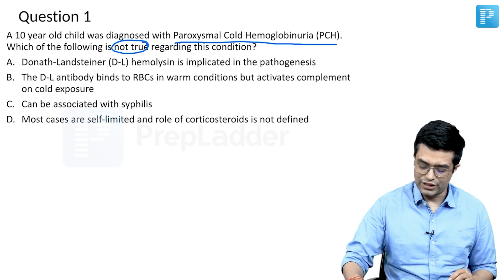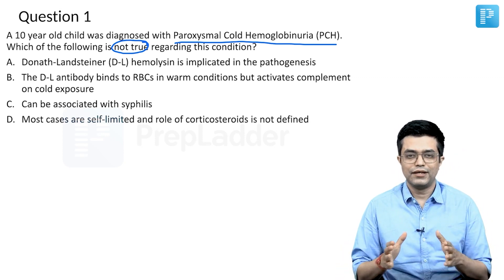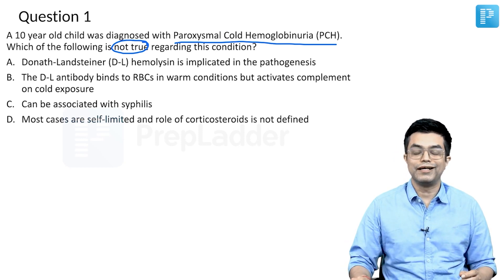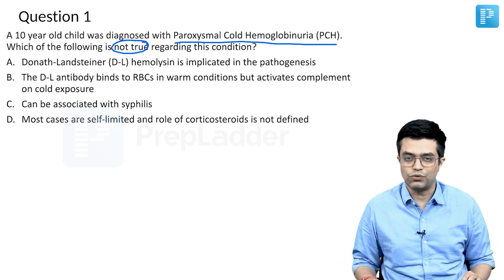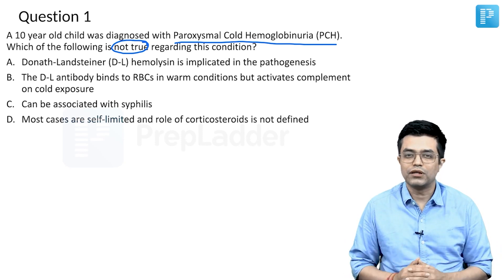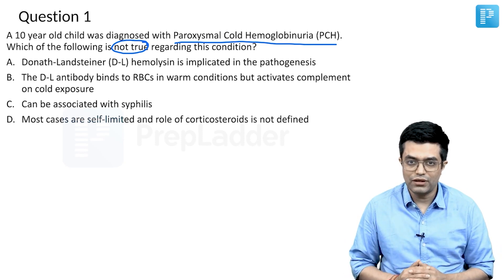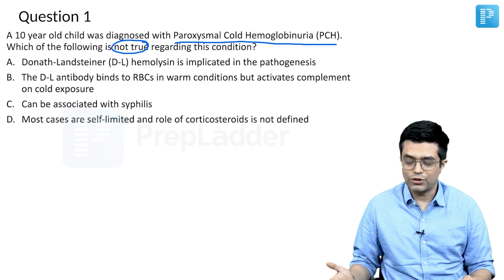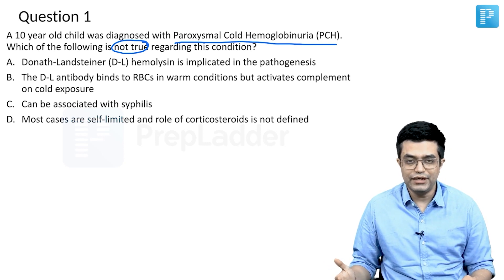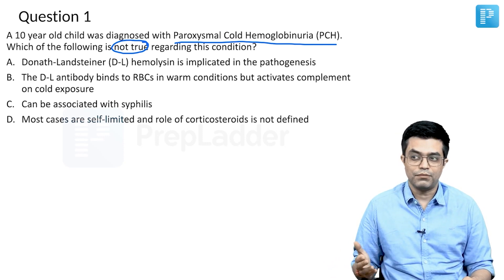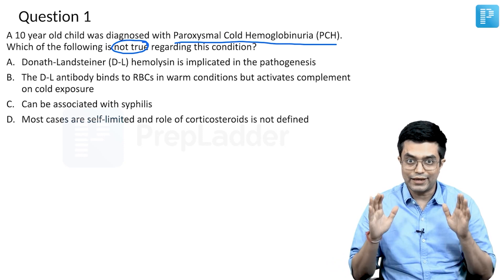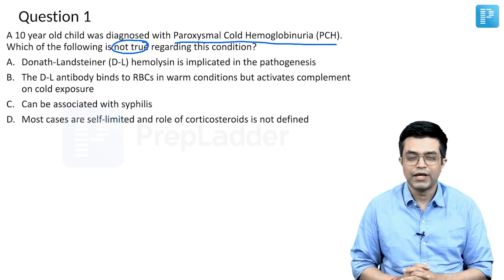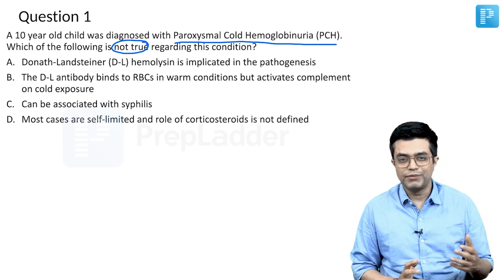PCH is not very common, but it is not absolutely rare either. PCH has been reported to occur in both children and adults. If asked about the median age of diagnosis, it is about four years, so it is predominantly seen in the pediatric population.